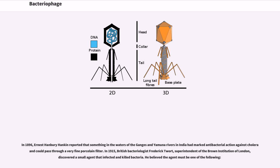In 1896, Ernest Hanbury Hankin reported that something in the waters of the Ganges and Yamuna rivers in India had marked antibacterial action against cholera and could pass through a very fine porcelain filter. In 1915, British bacteriologist Frederic Twort, superintendent of the Brown Institution of London, discovered a small agent that infected and killed bacteria.